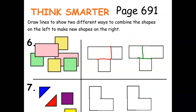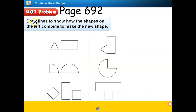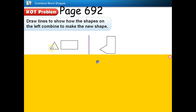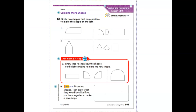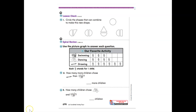You will complete number seven by yourself. Draw lines to show how the shapes on the left combine to make the new shape. For example, there is a triangle and a rectangle on the left. I will try to find the shapes on the new shape and then draw lines to show how these small shapes are combined together. Once you have solved all these problems, you can go on to do your homework on pages 693 and 694. When you finish, you can upload it to ClassDojo. Have fun learning! Bye!